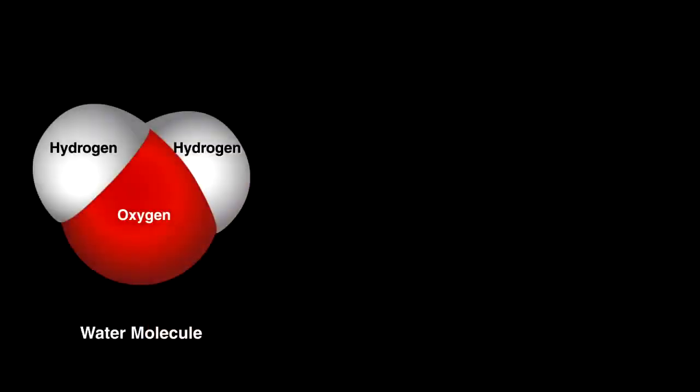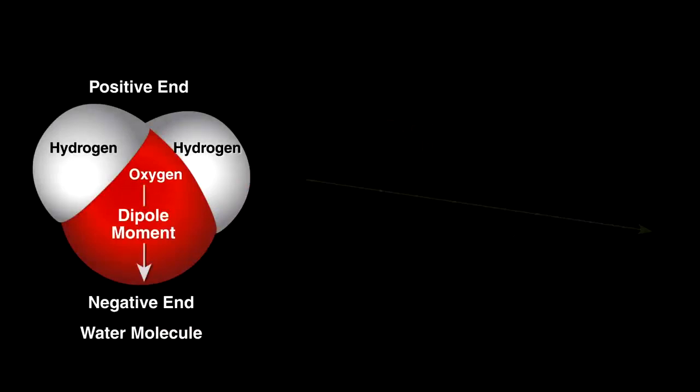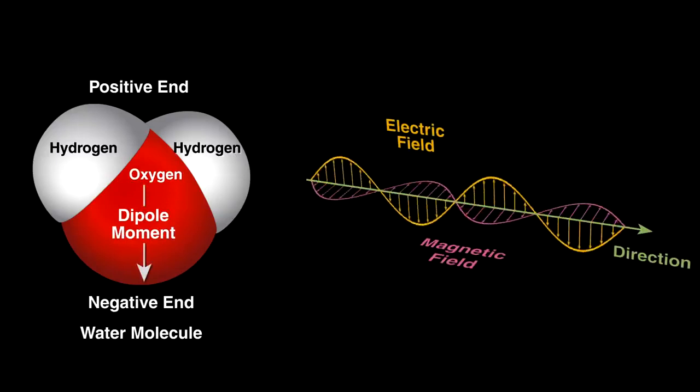Well, our food is filled with water, which is positively charged at one end and negative at the other. To give these molecules more energy, we expose it to electromagnetic waves that emanate from the tube.